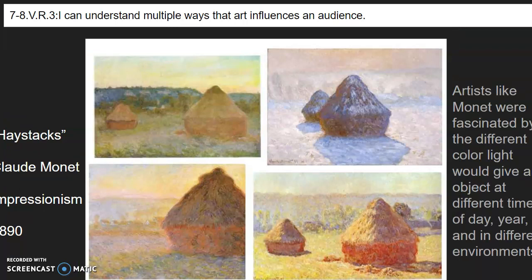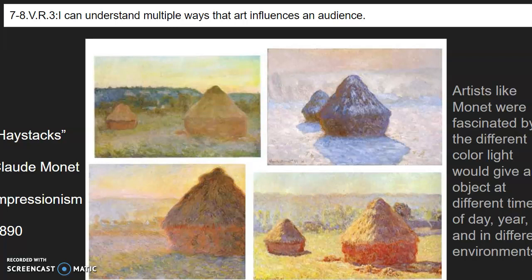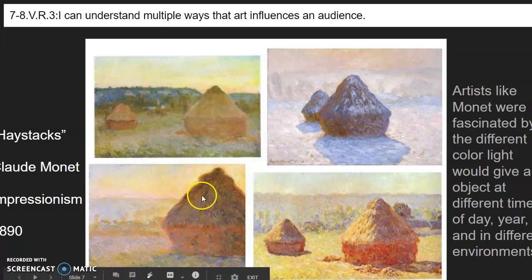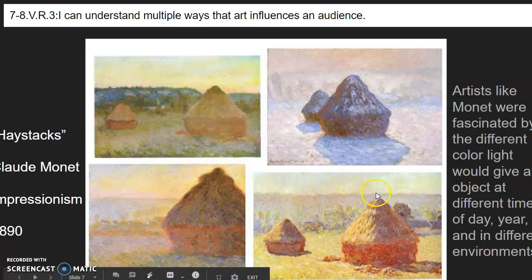Claude was obsessed with painting light. One of the things he would do was paint the same objects at different times of day, different times of year, at different locations. These are haystacks — not the most interesting subject, but something he could stare at for hours. You can see the differences: one looks like an early spring morning, another like a winter evening with the sun just starting to set, another like fall in the afternoon. One haystack is so dark because the sun is behind it; another looks like the middle of summer morning, suggested by the dramatic shadow.